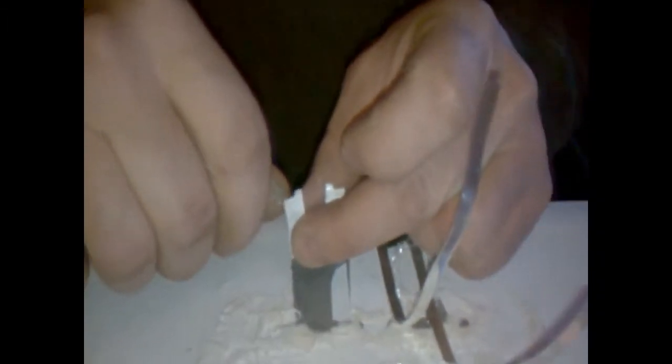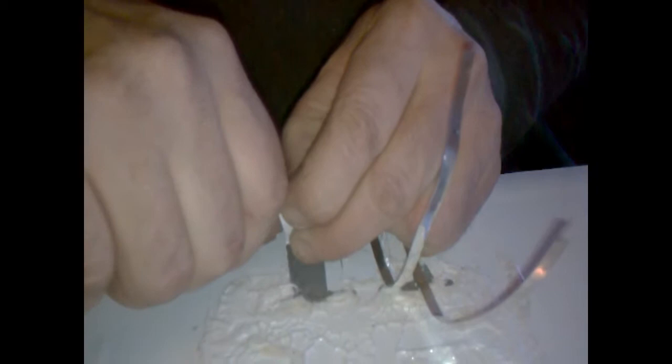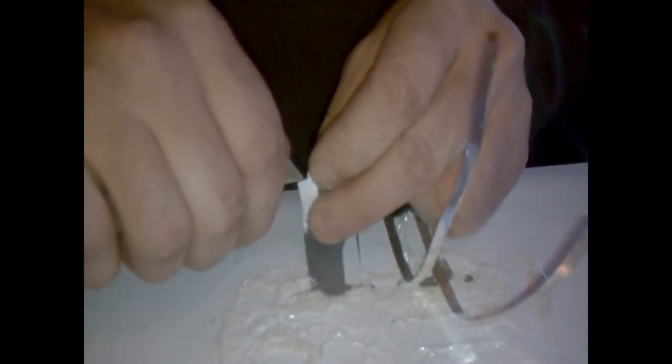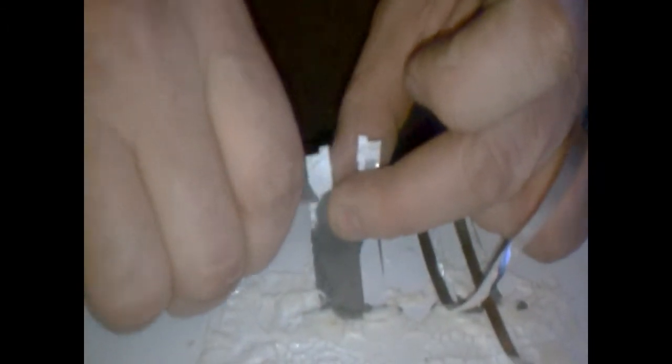Now, we need to cut the insulation from the top, and peel it back to the end of the tab. Now you can start to see the end of the tab there, and that's where we will solder an extension.